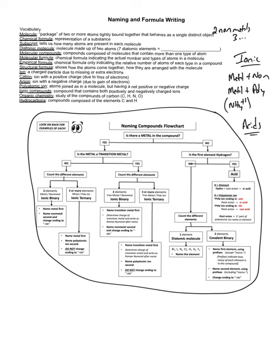Diatomic molecules are any molecules made up of two atoms. For example, carbon monoxide is a diatomic molecule because it's chemically bonded together and there are two atoms that make it up. There are also diatomic elements where even though there's a bond, it's not a compound but an element.